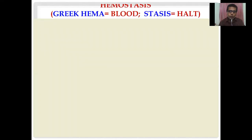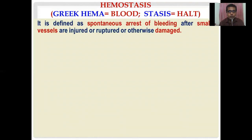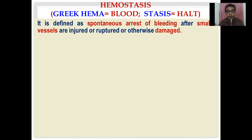So what is hemostasis? The word comes from Greek: 'hema' means blood, 'stasis' means hold or stoppage. Hemostasis is defined as the spontaneous arrest of bleeding after smaller vessels are injured, ruptured, or otherwise damaged.